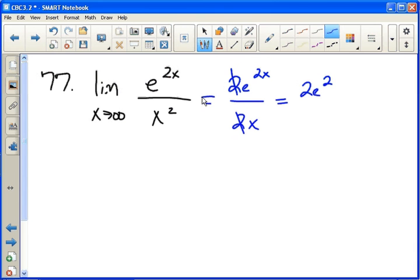We get 2e to the 2x over 1, and now we just get infinity on top. So when the top is going to infinity but the bottom is just staying one, then the answer is infinity.